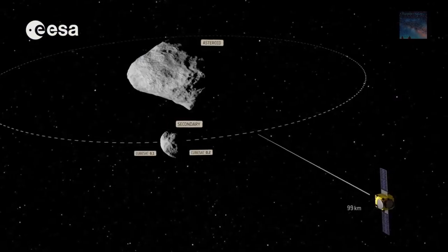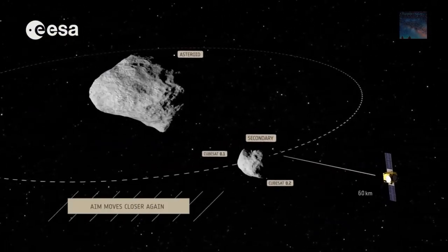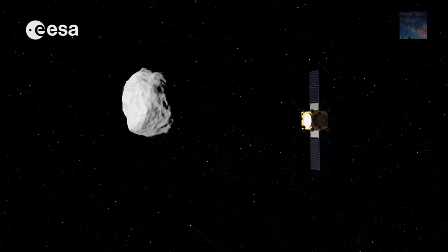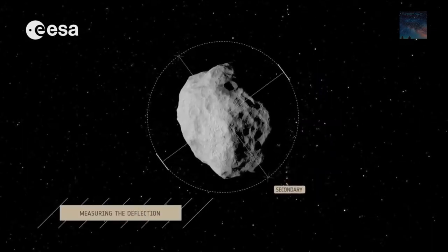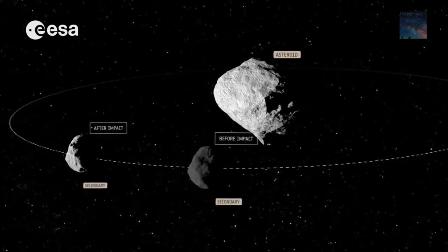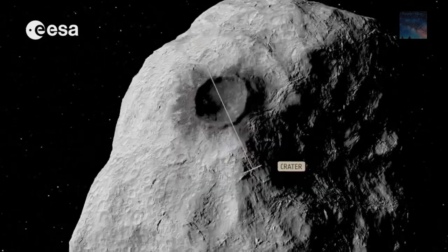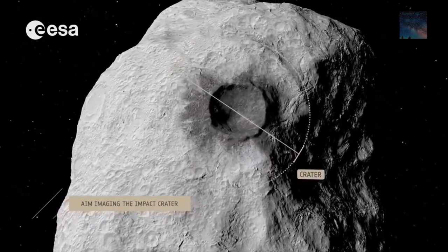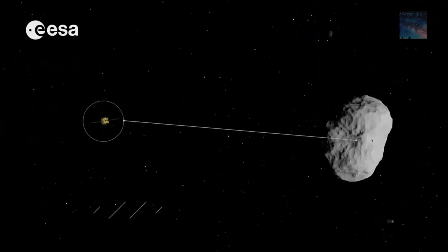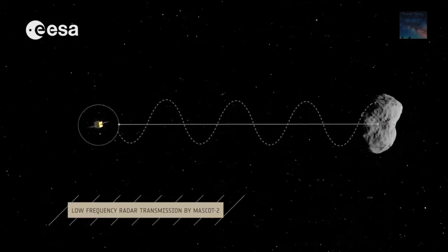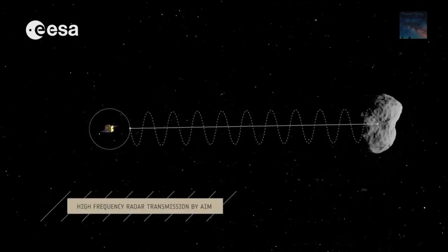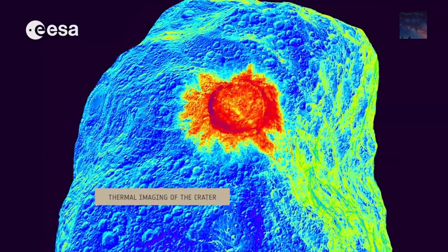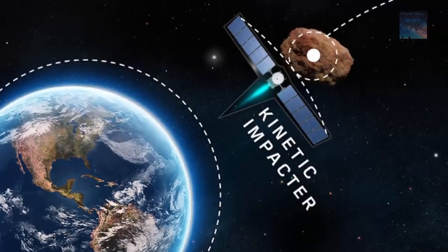All images and relevant data acquired by Hera will be used to analyze Didymain. Didymain's mass can be calculated with about 90% accuracy by measuring the wobble that Didymoon causes on Didymain. The key data gathered by Hera will turn a grand but one-off experiment into a well-understood planetary defense technique, one that could in principle be repeated if we ever need to stop an incoming asteroid like Apophis.